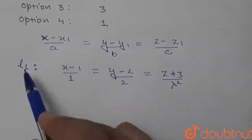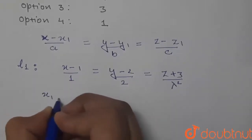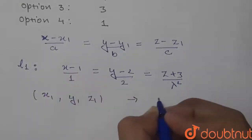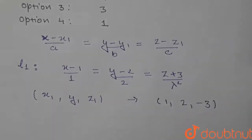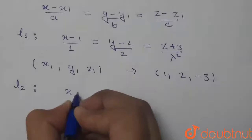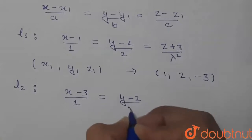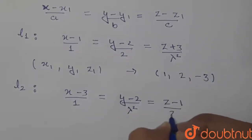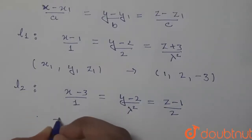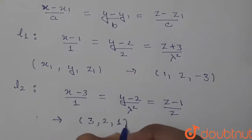On comparing Line 1 with the general equation, we conclude that x₁, y₁, z₁ are 1, 2, −3. Similarly for Line 2, the equation is (x−3)/1 = (y−2)/λ² = (z−1)/2, so on comparing, the points are x₂, y₂, z₂ = 3, 2, 1.